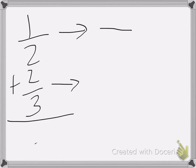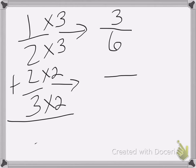So I know that a common denominator of 2 and 3 is 6, so I multiply 2 times 3 to get 6, so I need to multiply the top by 3 to get 3/6, and I multiply 3 by 2 to get 6. So I have 2 times 2 is 4. In this case I'm adding them.